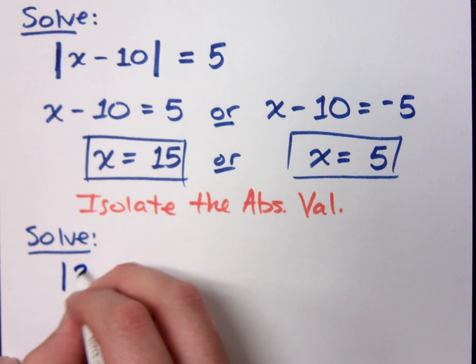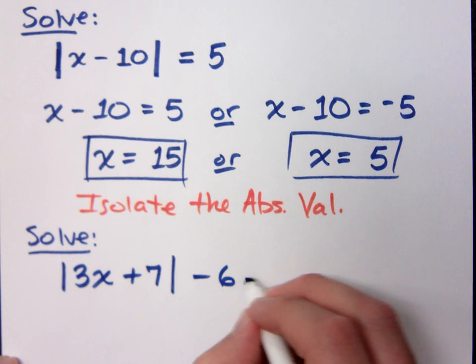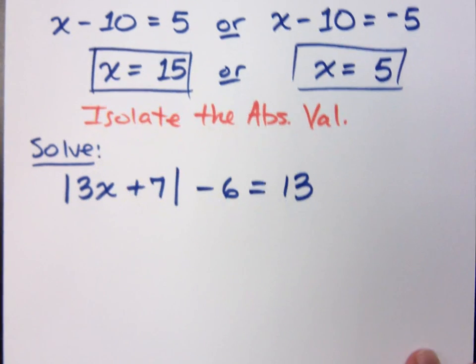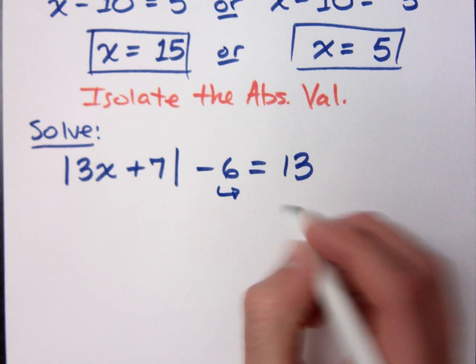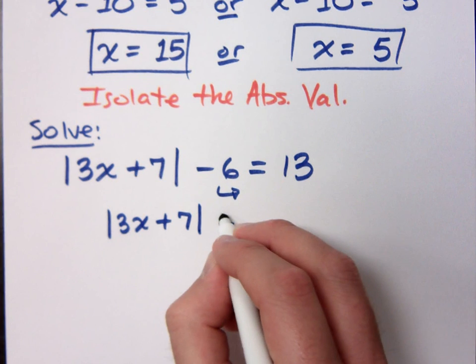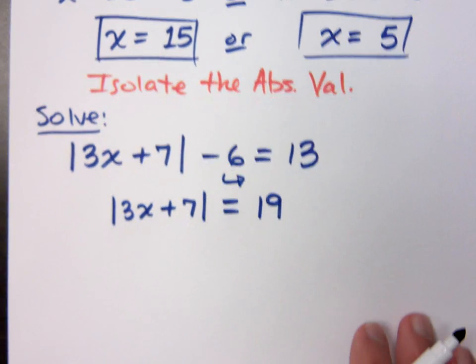If I take the absolute value of 3X plus 7 minus 6 is equal to 13, what am I going to do here? Move the 6. I've got to move the 6. Remember when we had the square root property? You had to get the square by itself before you did the square root of both sides with a plus or minus. Same thing happens here. You have to get the absolute value by itself. So if I add the 6 over, I still have the absolute value of 3X plus 7, but it equals 19.